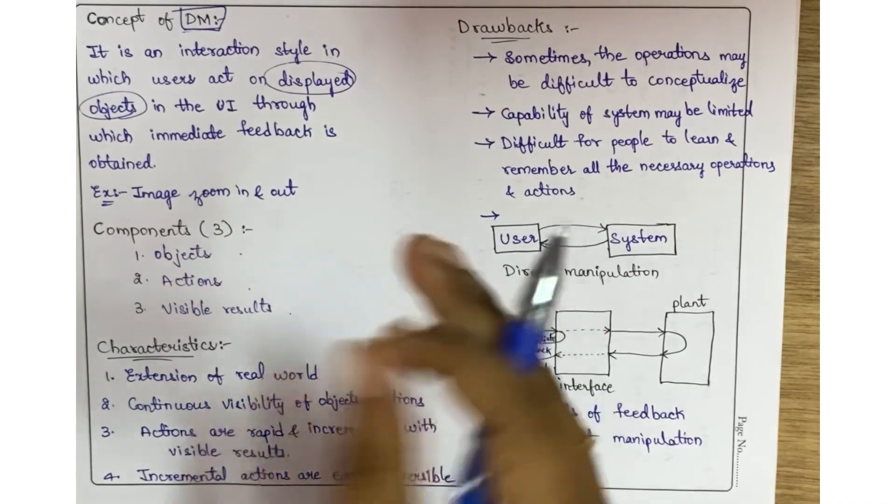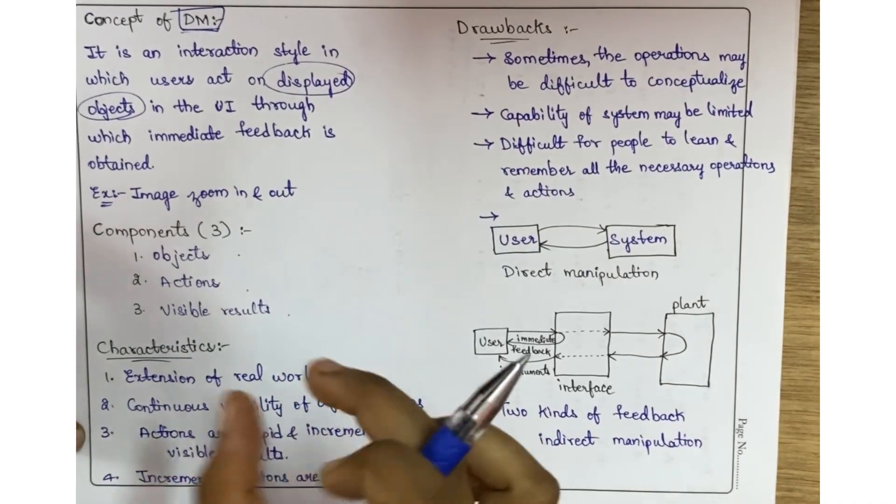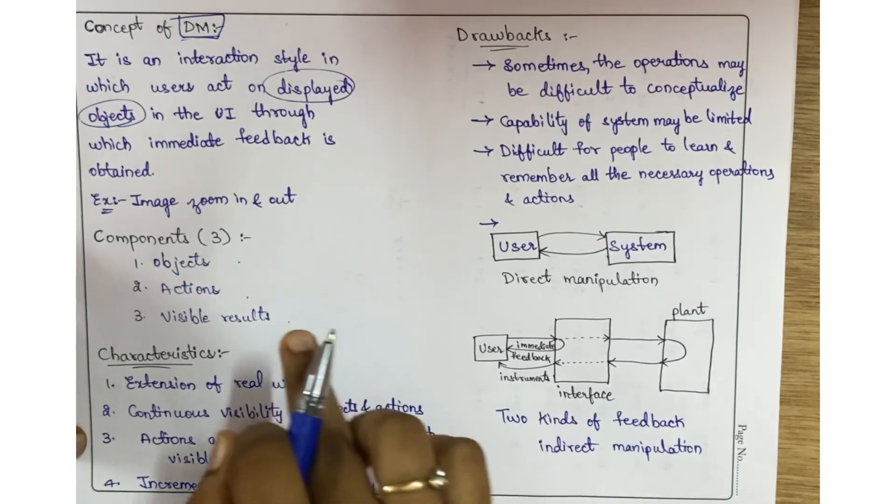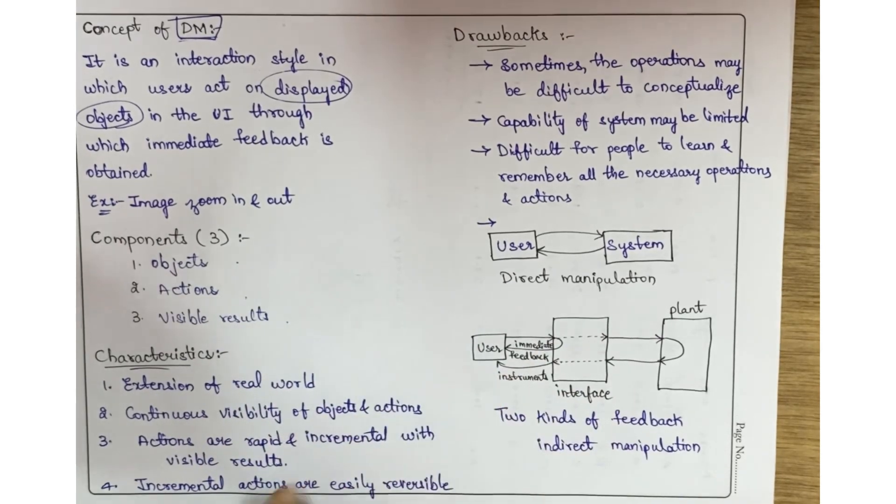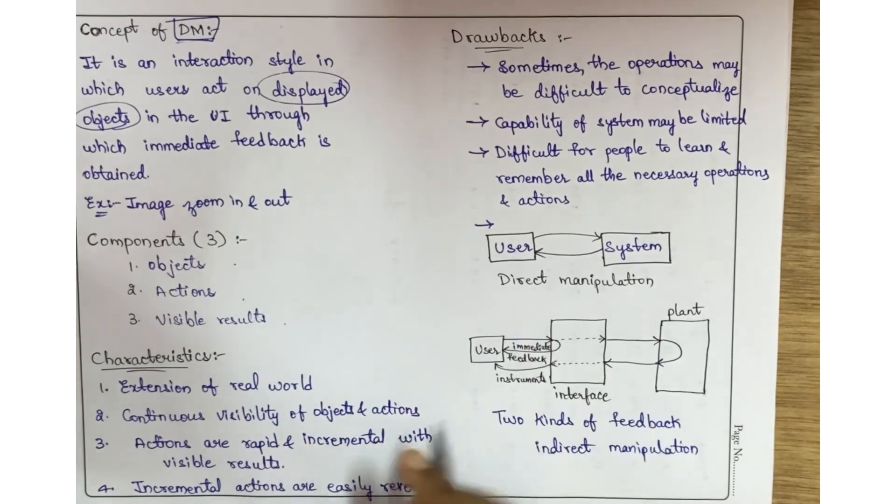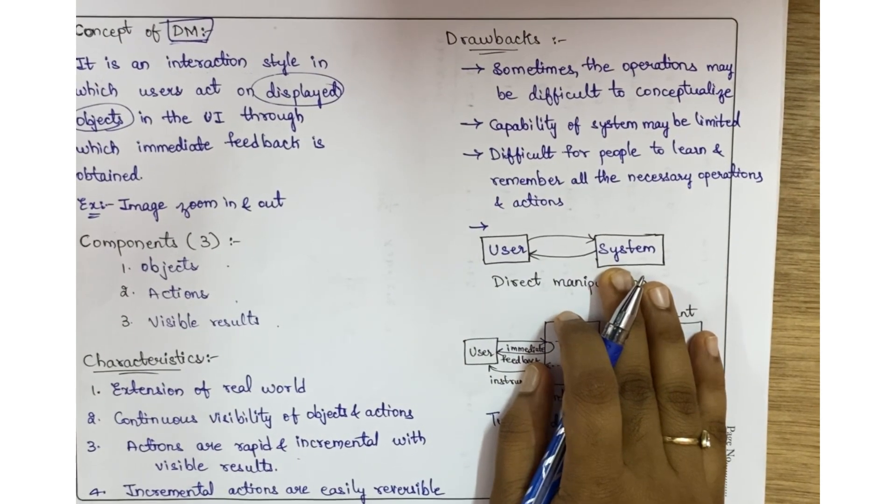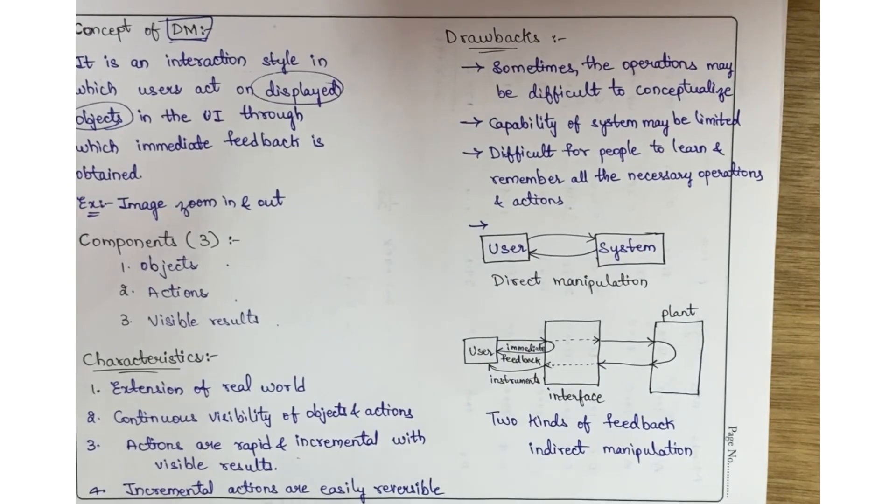This means continuous visibility of objects and actions. Objects are whatever you see on screen, actions are what you're performing like clicking on the Gmail tab, then the inbox tab. These actions are rapid and incremental with visible results. We are able to see the results immediately, instantaneously.